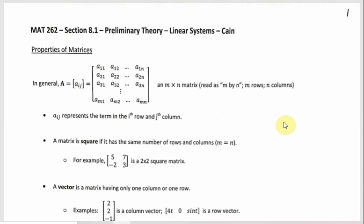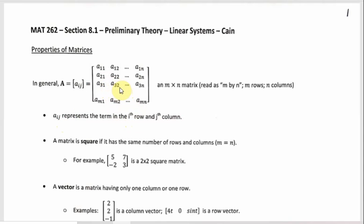This first page is mostly matrix properties. Generally, a matrix is set up where A11 and A12 are different entries. The subscripts M and N mean it's in the Mth row and the Nth column — so it's an M by N matrix. The A sub IJ notation means the entry in the Ith row and Jth column. For example, A3,2 is in the third row, second column; A2,1 is in the second row, first column.